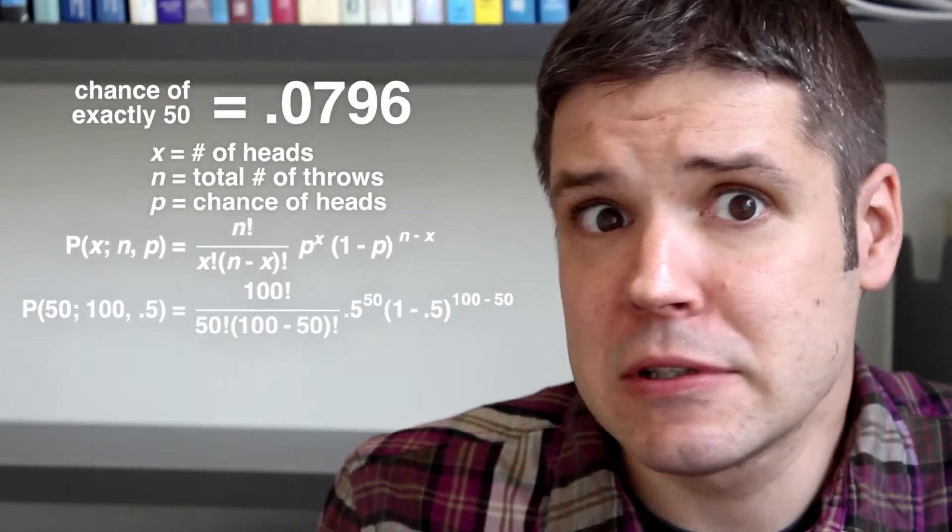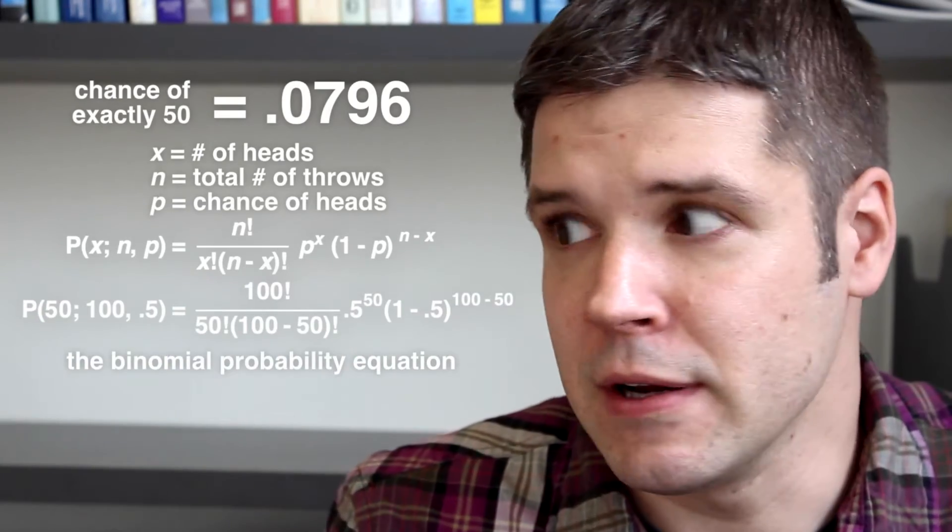Now if I'm right and the coin is fair, you'd expect it to land on heads about half the time. But would you expect it to be exactly 50 heads? It's the most likely outcome, but the chance of it landing on heads exactly 50 times is just shy of 8%. We won't go into detail about how to calculate that here, but it looks like this, so pause if you're curious.